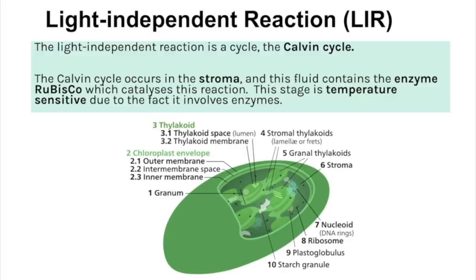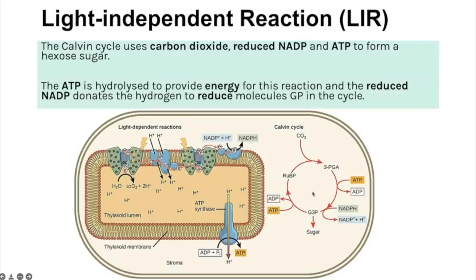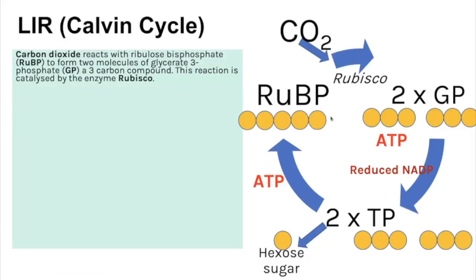ATP and reduced NADP are used in the light independent reactions, also known as the Calvin cycle, which occurs in the stroma. It requires enzymes — the key one is rubisco — making this stage temperature sensitive, but it does not require light energy. The Calvin cycle uses carbon dioxide plus the two products from the light dependent reactions to create a hexose sugar. ATP is hydrolyzed to provide energy, and reduced NADP donates hydrogen to reduce GP within the cycle.